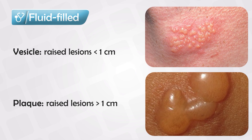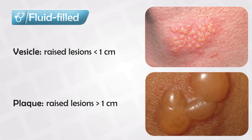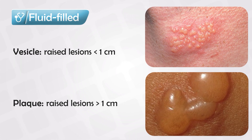On the other hand, if the fluid-containing lesion is more than one centimeter, it will be known as a bulla. Bulla tends to be larger in size and smaller in number. The most common example for vesicle is, of course, chickenpox and shingles, which is also known as zoster. And the example we have for bulla is bullous pemphigoid. So if the raised skin lesion contained fluid and was less than one centimeter, it will be known as a vesicle, and if larger than one centimeter, it will be known as a bulla.